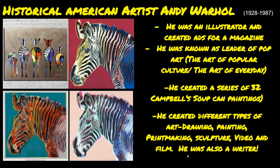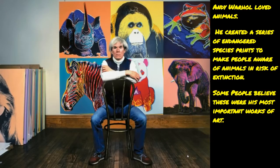Here you can see three works of zebras that he created — you can definitely see how he used his imagination. He loved animals and created a series of endangered species prints to make people aware of animals at risk of extinction. These were made in 1983, and some people believe these were his most important works of art.